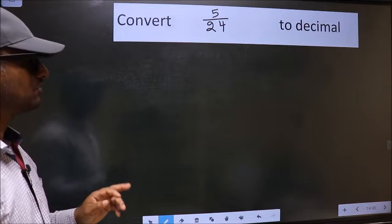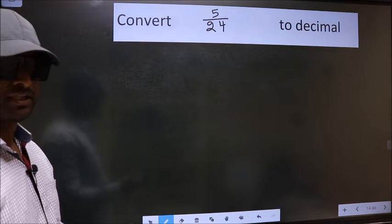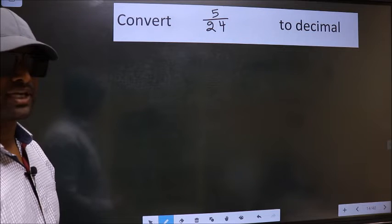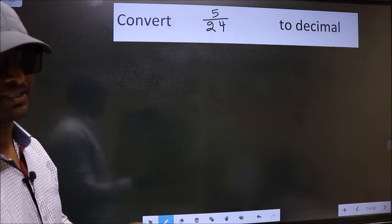Convert 5 by 24 to decimal. To convert to decimal, we have to divide. And to divide, we should frame it in this way.